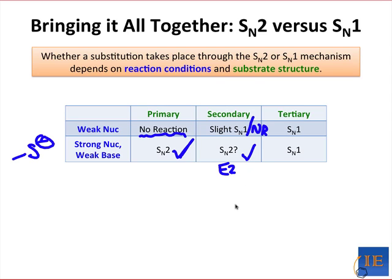And finally, tertiary electrophiles are positively unable to undergo SN2, but may undergo SN1 when weakly basic nucleophiles are used.